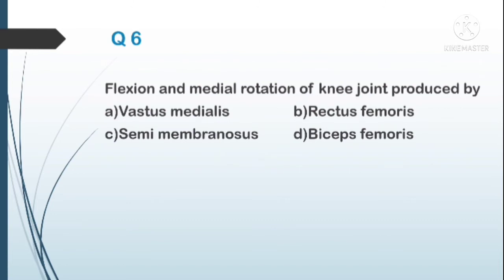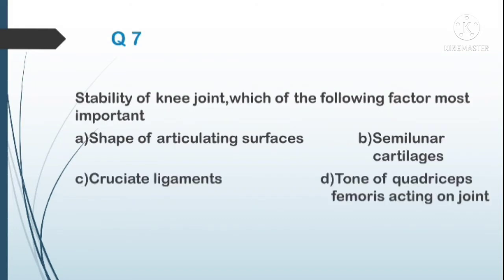Question number six: flexion and medial rotation of the knee joint are produced by which muscle? A) vastus medialis, B) rectus femoris, C) semimembranosus, D) biceps femoris. The answer is C, semimembranosus — both flexion and medial rotation are produced by this true hamstring muscle.